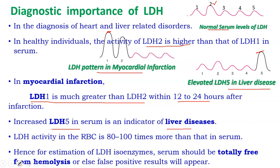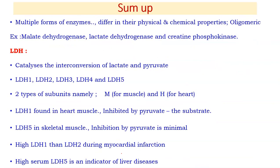An important note: LDH activity in red blood cells is 80 to 100 times more than in serum. Therefore, during LDH isoenzyme estimation, the serum must be completely free from hemolysis — totally free from RBCs. Serum must be prepared with utmost care; otherwise, false positive results will be obtained.